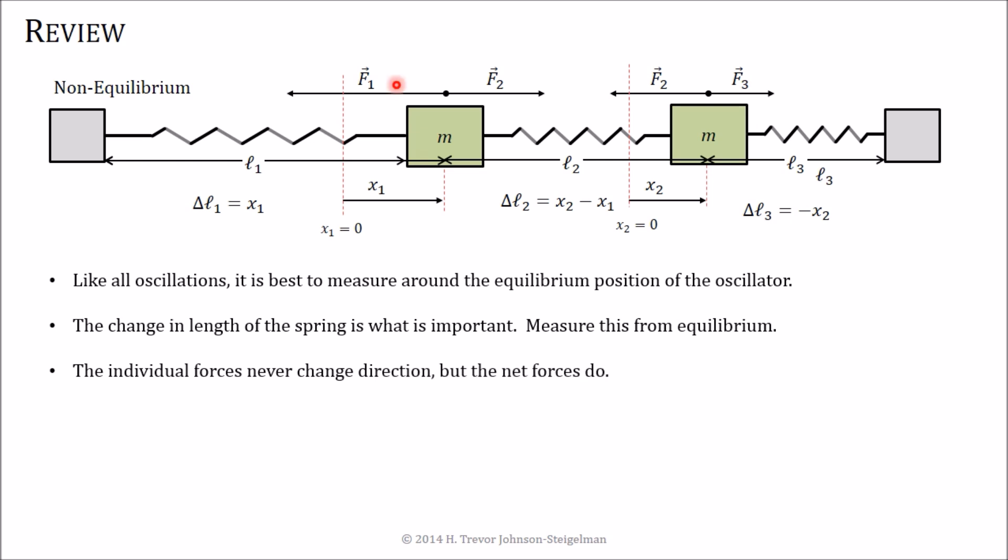The individual forces F1 never change direction, but the net force on each object can and does. And the equations of motion are given by these two guys, where notice that the negative 2k switches from x1 to x2 and likewise for those two. So these equations look somewhat symmetric, and that's going to be useful in the next presentation when we talk about how to further model the motion of these coupled oscillators.